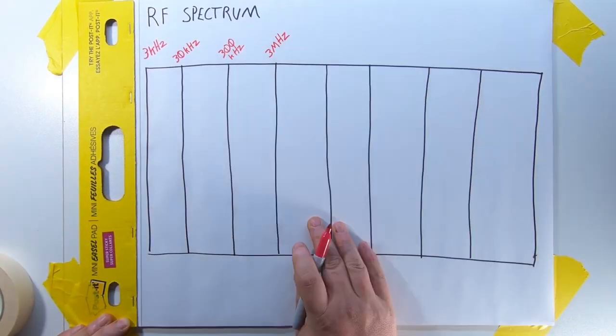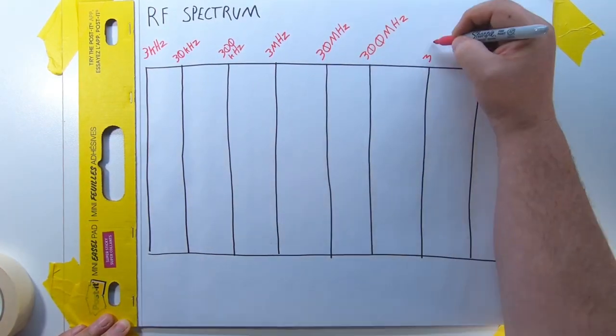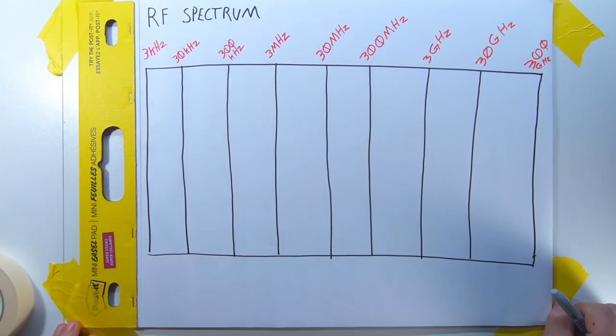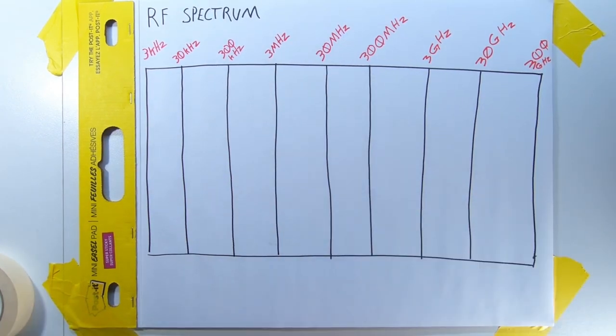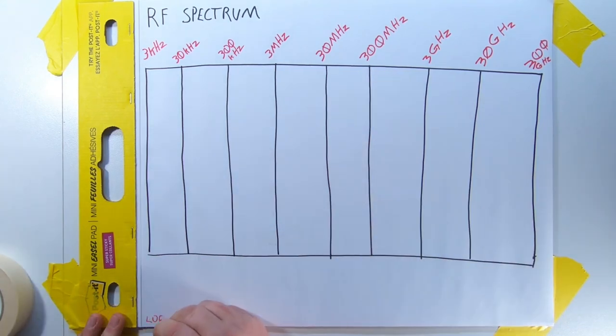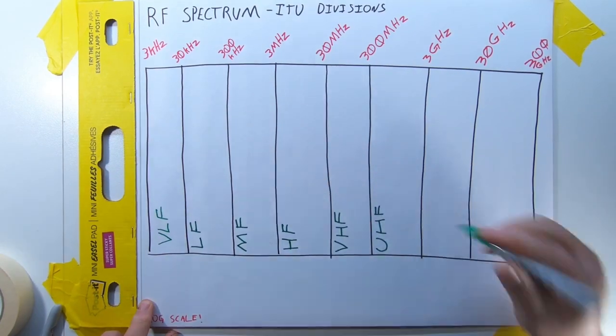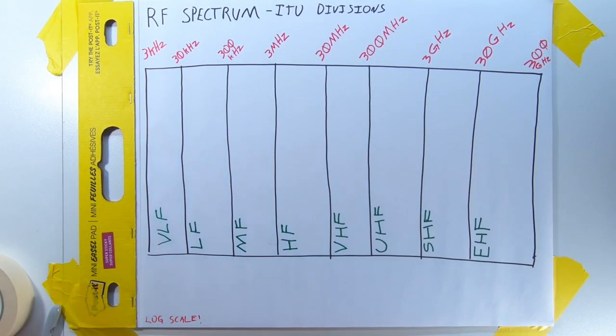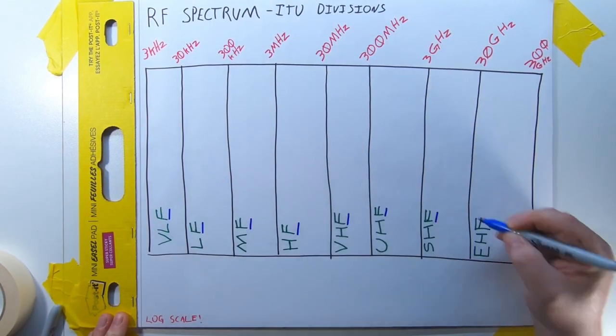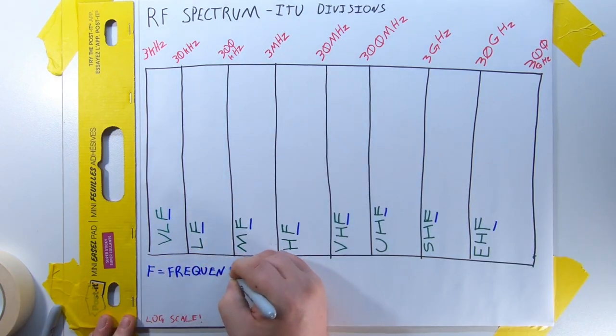On this chart, we're going to focus from 3 kHz to 300 GHz. Remember, that's 3,000 to 300 trillion Hz. If you'll look closely, that's not a linear scale. The RF spectrum is broken up into eight parts, and each part is given an acronym. The last letter in each acronym is the letter F, which, unsurprisingly, stands for frequency.